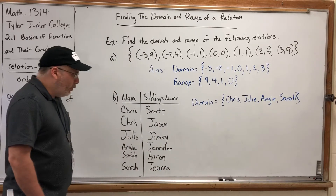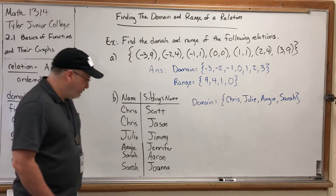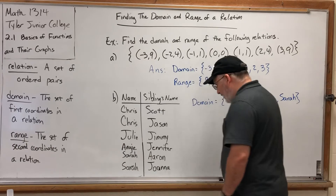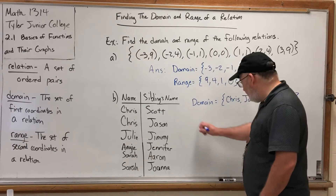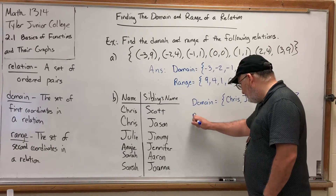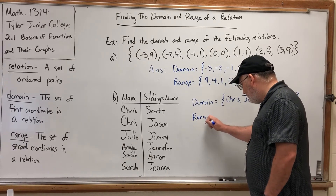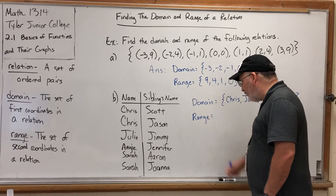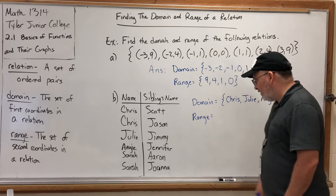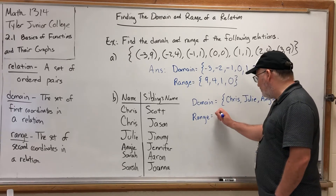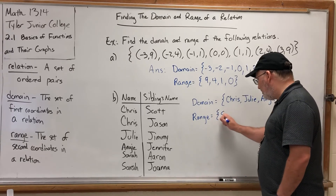What's the range? It doesn't look like there are any names duplicated in the range. So if I wanted to write the range for this relation, I would have to write all six names: Scott, Jason, Jimmy, Jennifer, Aaron, and Joanna.